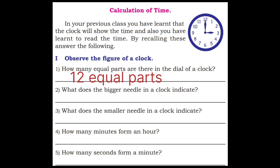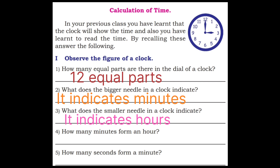Second question: What does the bigger needle in a clock indicate? It indicates minutes. Third one: What does the smaller needle in a clock indicate? It indicates hours. Fourth one: How many minutes form an hour? 60 minutes form an hour. Fifth one: How many seconds form a minute? 60 seconds form a minute.